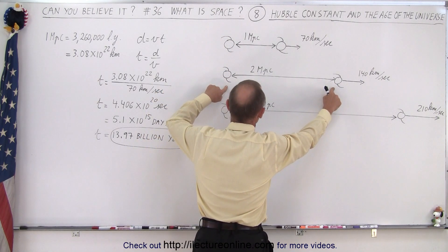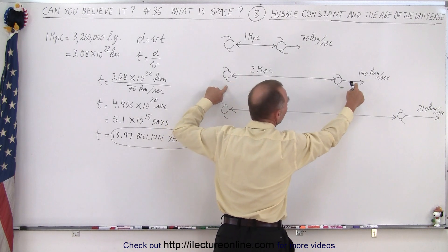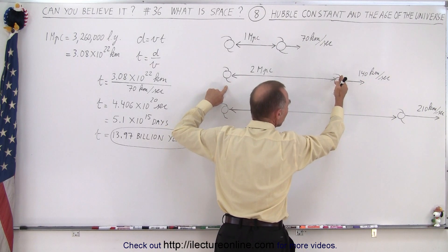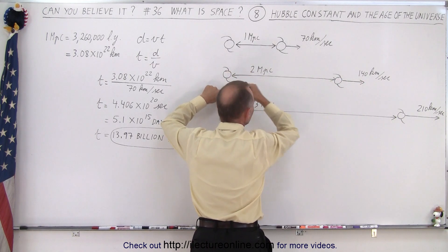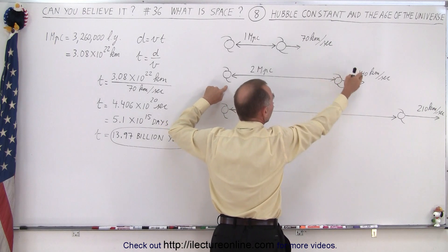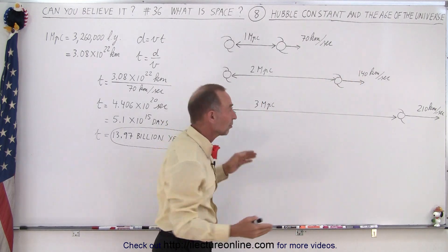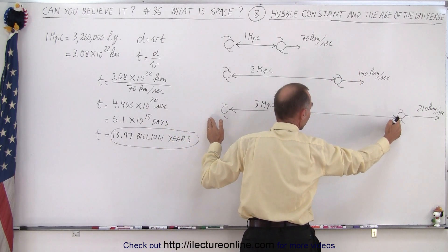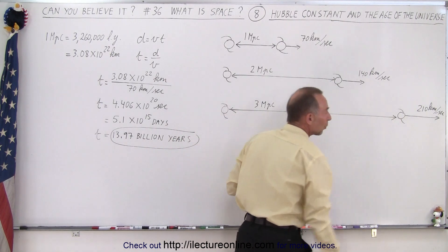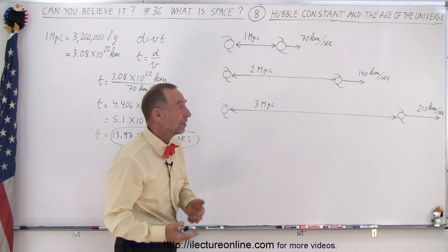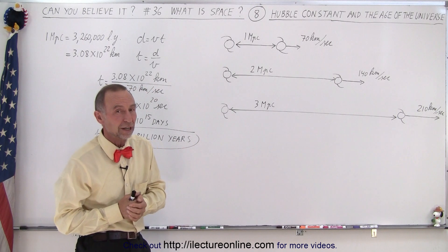If the galaxies are two mega parsec apart, that means that the speed, the recession speed, or the speed at which this galaxy moves away from this galaxy, would be twice as much, or 140 kilometers. And if the distance between two galaxies is 3 mega parsec, the speed at which they move away from each other is 210 kilometers per second, and so forth.